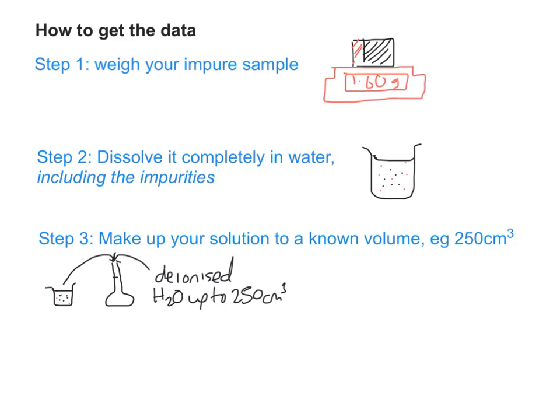You can notice that some of the little black dots represent my pure sample, some of the little red dots represent impurities. It doesn't particularly matter exactly how much water you need to dissolve it, because in step three you add that to a volumetric flask, such as a 250 centimetres cubed volumetric flask, and make it up to the mark using deionized water.